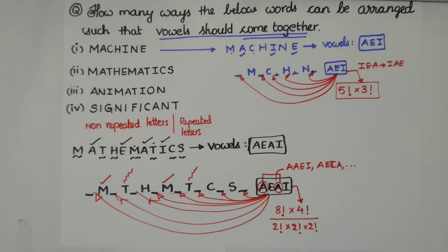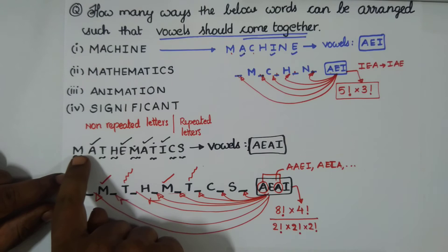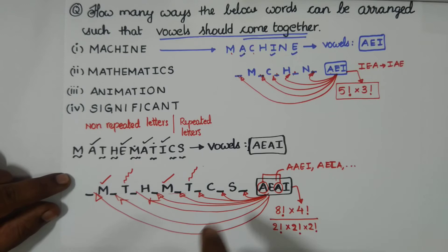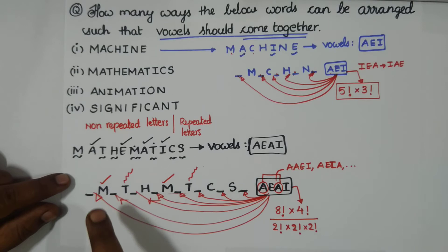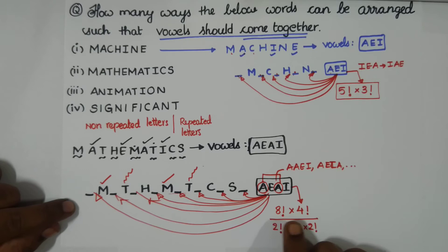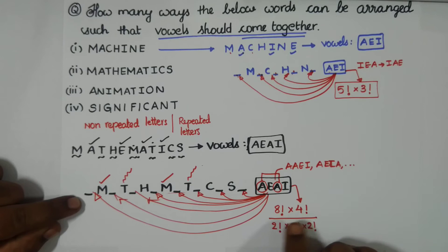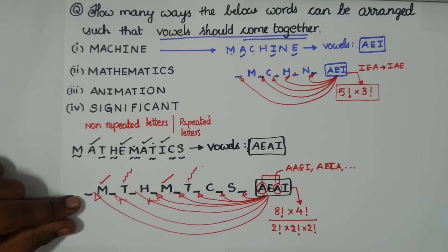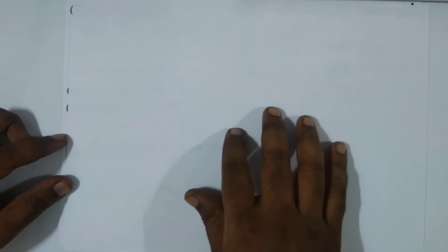To summarize the method: segregate vowels from the word, put them together as a group. Take the remaining consonants. If there are seven consonants, seven plus one gives eight blanks — eight factorial. Multiply by the factorial of the number of vowels in the group. Any repeated letters go in the denominator. It's very simple and straightforward.